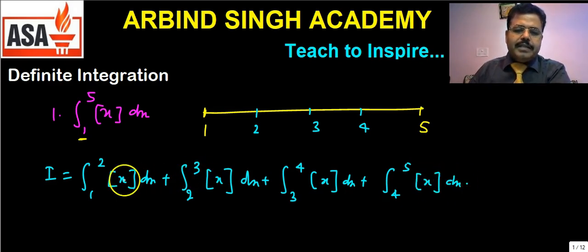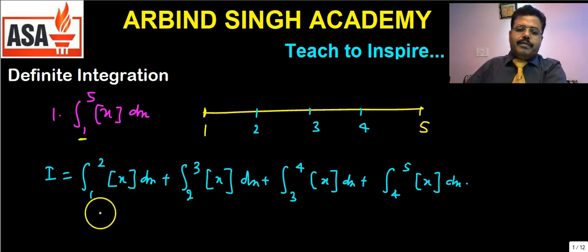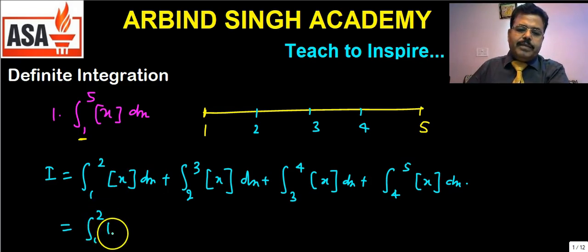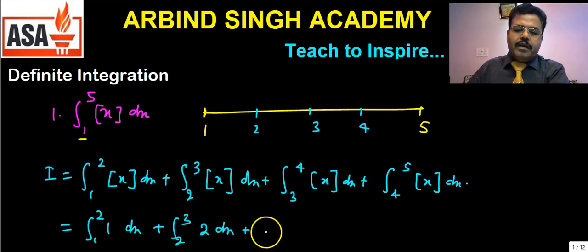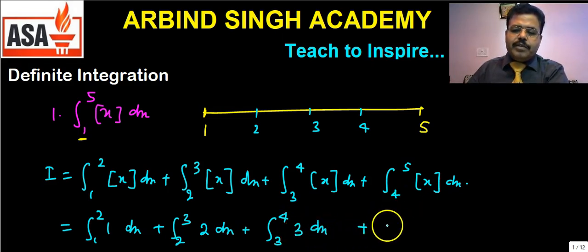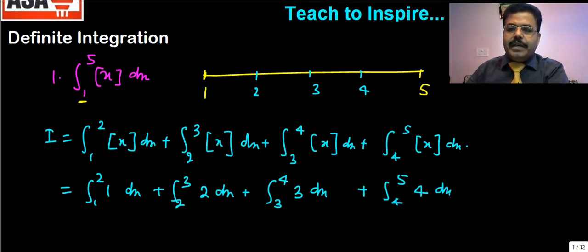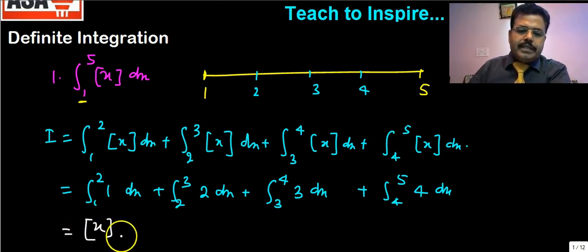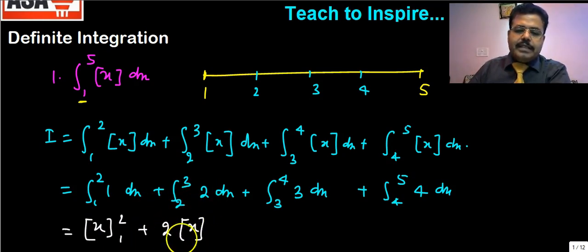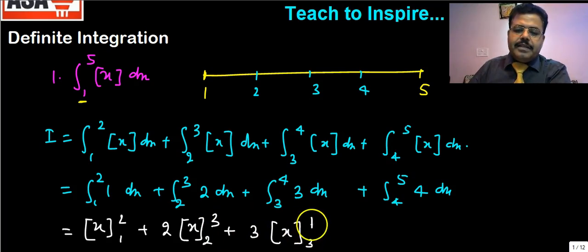Why should we break it like this? Because if the value of x is between 1 and 2, the Greatest Integer value will be 1. When x is between 2 and 3, the integral value becomes 2. Between 3 and 4 it becomes 3, and between 4 and 5 it becomes 4. Now integrating: 1 comes out as a constant, integrated from 1 to 2; then 2 comes out integrated dx from 2 to 3; similarly 3 comes out with x from 3 to 4.